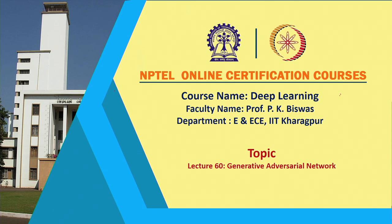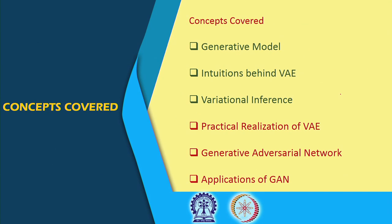Hello, welcome back to the NPTEL online certification course on Deep Learning. For the last few classes we have been discussing about the generative network. What we have discussed is that if you feed in a latent vector or latent variable to the generative network, it will give you an output data or reconstructed image. The kind of generative network we have been discussing is known as adversarial autoencoder.